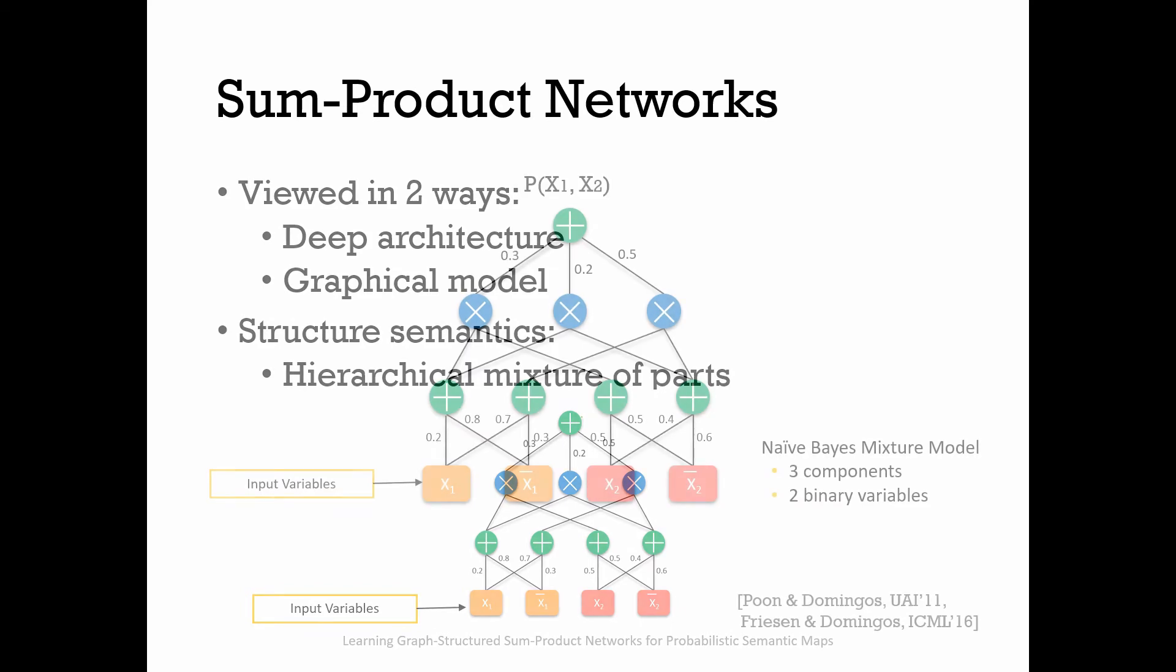In its simplest form, the network is a directed acyclic graph of alternating layers of weighted sum and product operations, as shown in the example here. Here, the SPN represents a naive Bayes distribution with three components over two binary variables, x1 and x2.